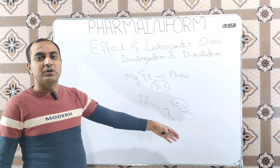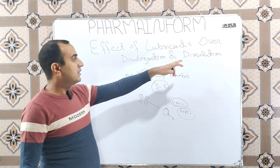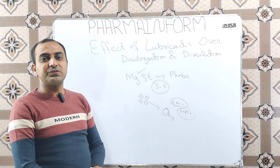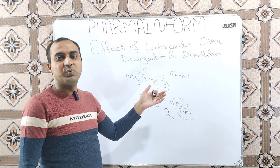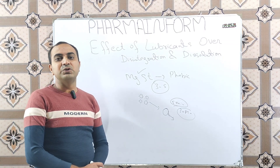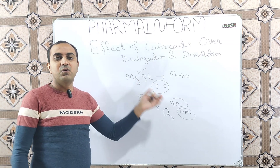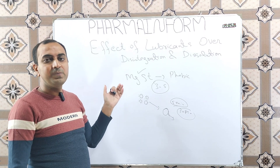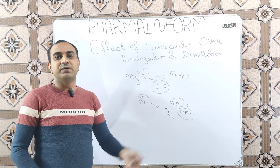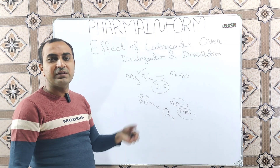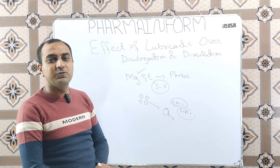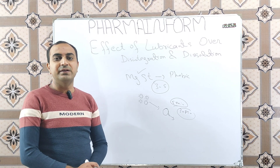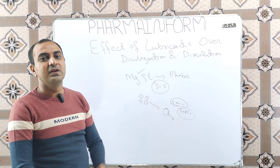When disintegration time is prolonged, the dissolution profile is also poor. This is a major drawback of hydrophobic lubricants when used at wrong blending time and wrong concentration. That is why you should always use the optimum concentration and optimum blending time. An alternative is to use hydrophilic lubricants — the main example being sodium steryl fumarate. If using a hydrophobic lubricant, its concentration and blending time must be optimized and critically checked.